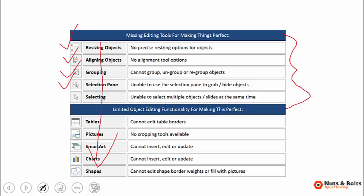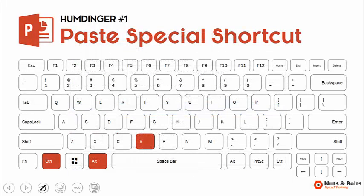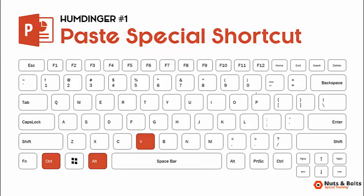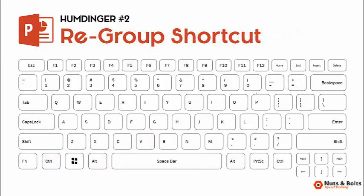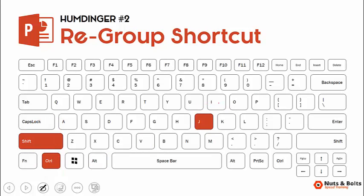That is your first humdinger PowerPoint shortcut: the paste special shortcut, Ctrl+Alt+V on your keyboard. Humdinger number two: you have the regroup shortcut, and almost nobody knows this. Ctrl+Shift+J will reform a group. Let me quickly show you how this works.